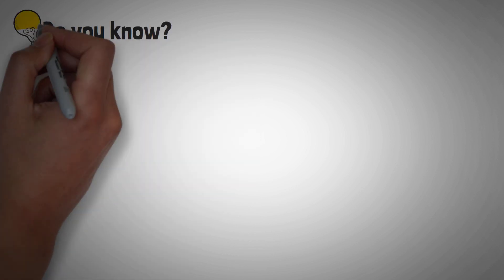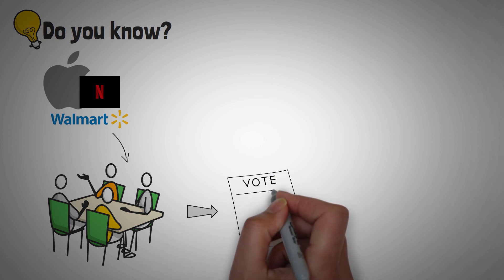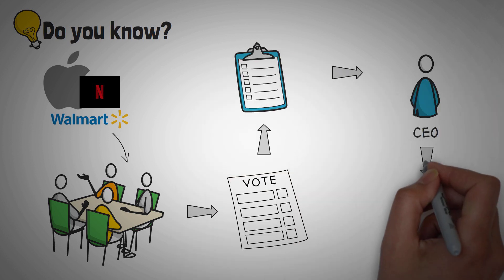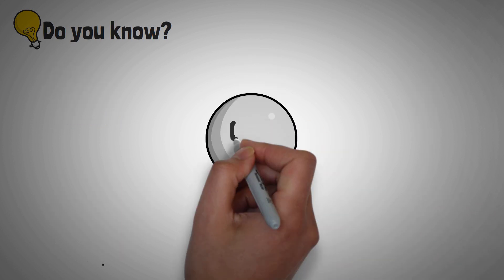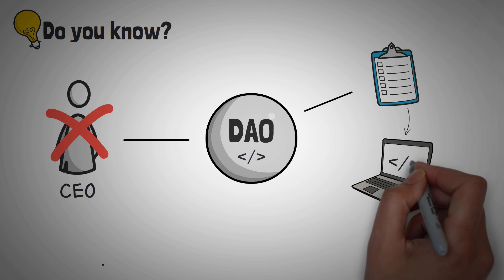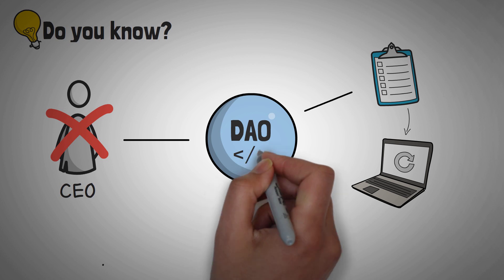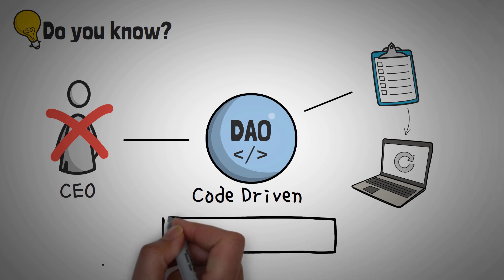Do you know how big companies like Apple, Netflix, or Walmart all have board meetings? At these board meetings, shareholders of the companies meet together, get to vote, and make decisions for the company. Then the CEOs of those companies make sure the decisions are followed through using the chain of command. In a DAO, there are no CEOs. Instead, once a decision is made, the code of the platform is changed so that the entire organization is changed immediately. The purpose of this is so that computers and code will perform much of the decisions and simple routine operations that a company like Apple or Netflix or Walmart requires to function.